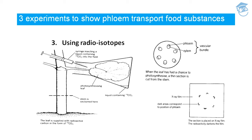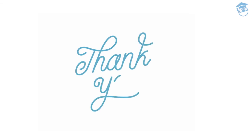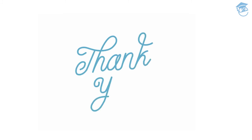This concludes all three experiments that show phloem is the conducting tissue that transports food substances from the leaf to other parts of the plant body. This ends the chapter. In the next section of the presentation, we will be discussing the plant kingdom. Stay tuned and keep watching Edipedia Wood Videos. Thank you.